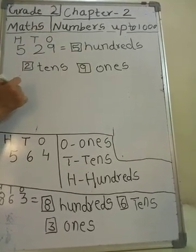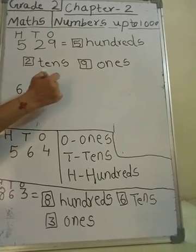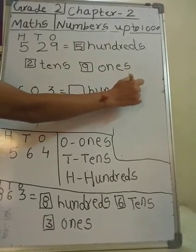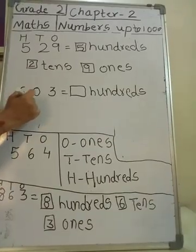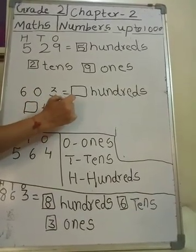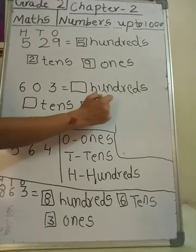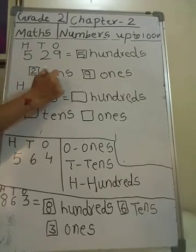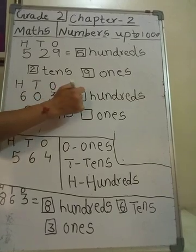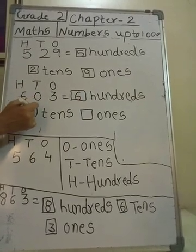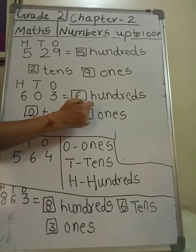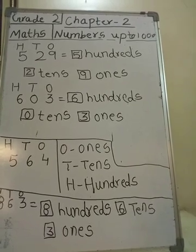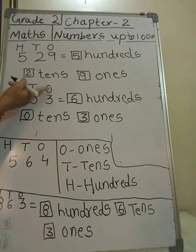Let's see one more example: 6, 0, 3. We will write H, T, O. Which number is at 100's place? 6. Which number is at 10's place? 0. And which number is at 1's place? 3. So you all understood that H is for 100's, T is for 10's, and O is for 1's.